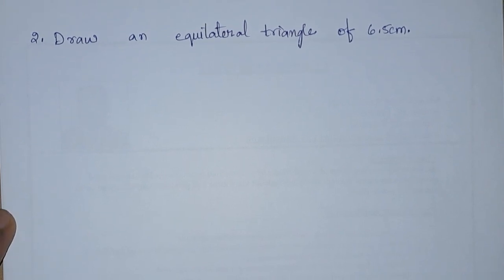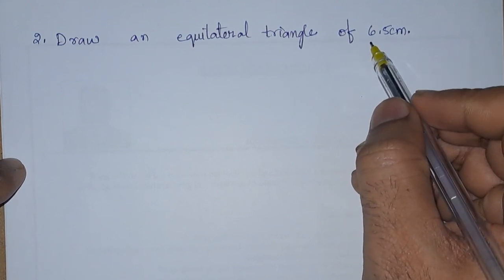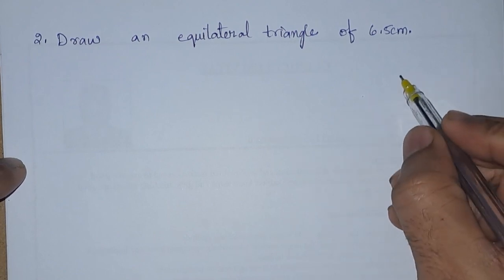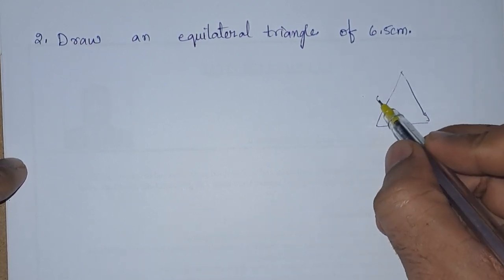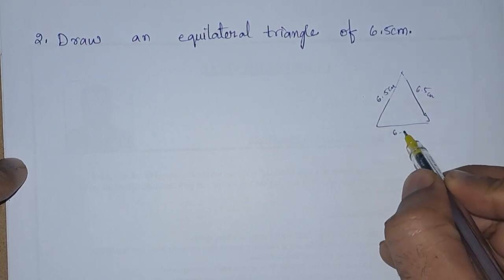Draw an equilateral triangle of 6.5 centimeter. In an equilateral triangle, we know that all the sides are equal. So now we are going to draw a triangle with all sides equal: 6.5 centimeter, 6.5 centimeter, and 6.5 centimeter.